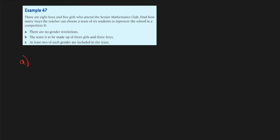For the final question, eight boys and five girls attend a senior mathematics club. We have to find how many ways a team of six students can be made to represent the school. For part a, there is no gender restriction, so the total number of people to choose from is 13 and we have to choose six. This gives 13 choose 6. It's not permutations because the order in which students are selected is not important — what matters is which students get selected. You can put this into your calculator to get the answer.